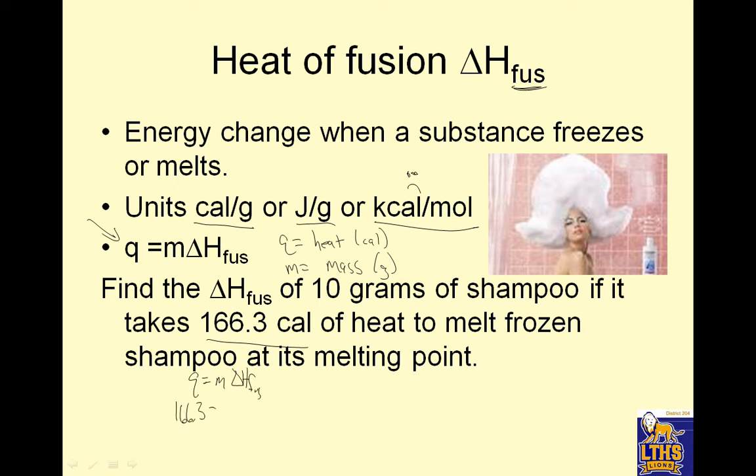If I solve for delta H fuzz, I get 166.3 over 10. So, delta H fuzz equals 16.63, 166.3 divided by 10 calories per gram. That's it. That's how you figure out the heat of fusion is something. This is what we figured out before. A lot of times you're asked for the Q from it, but you get the idea.